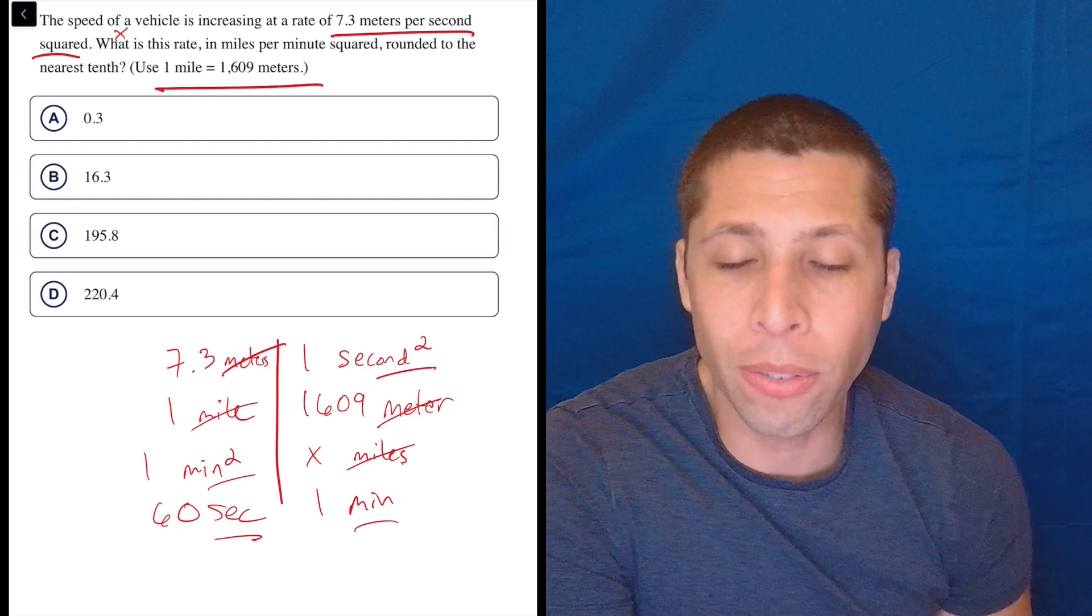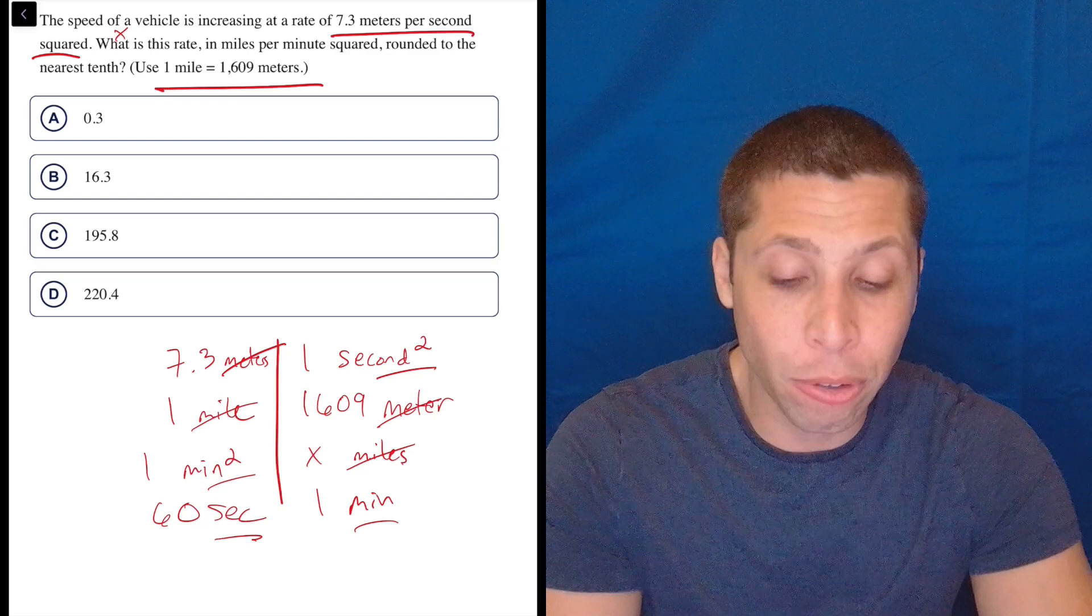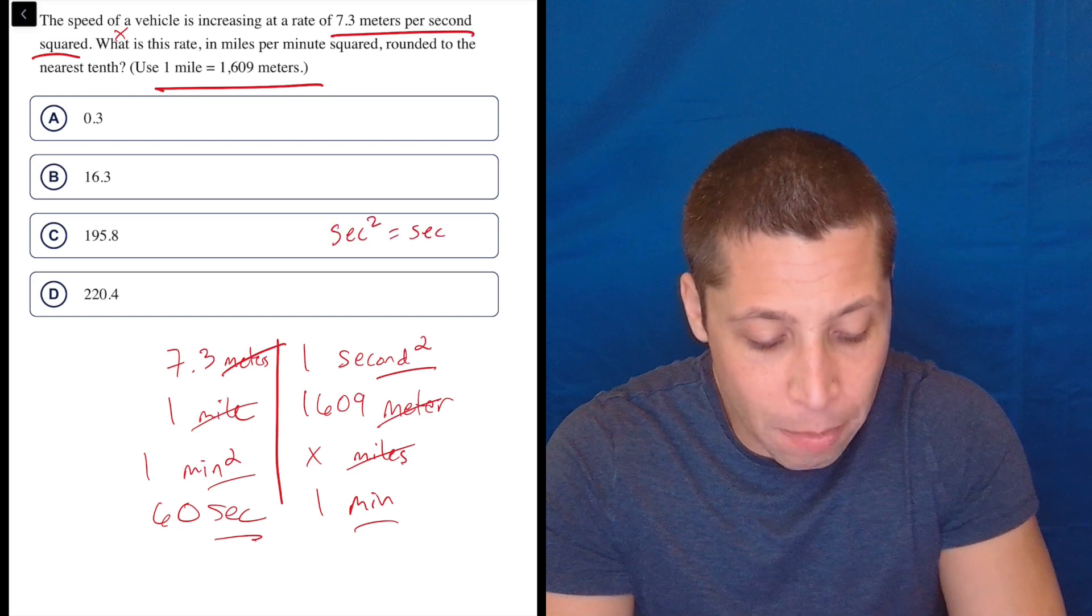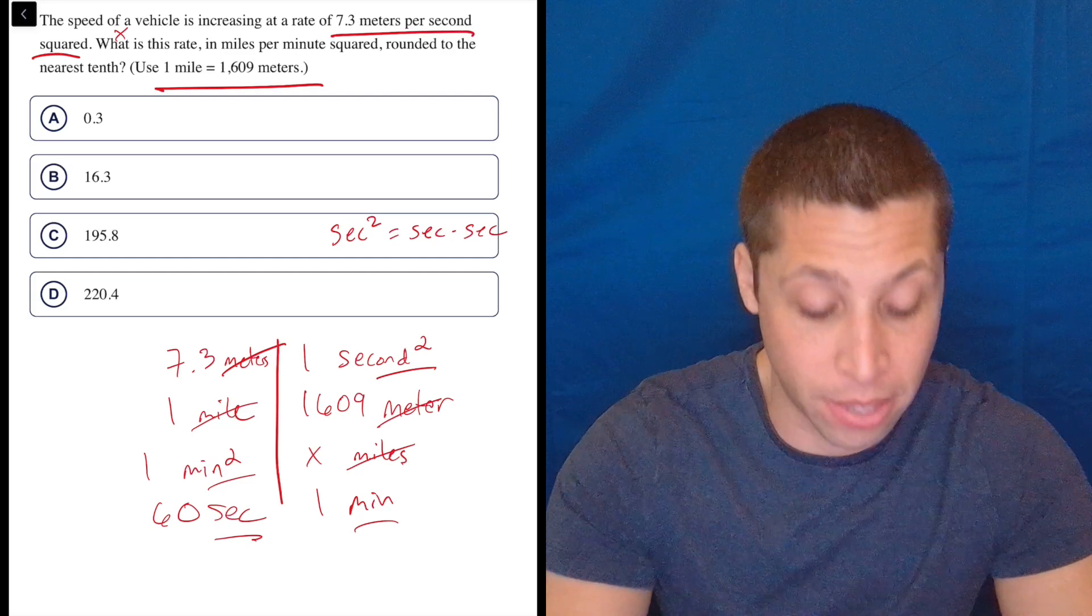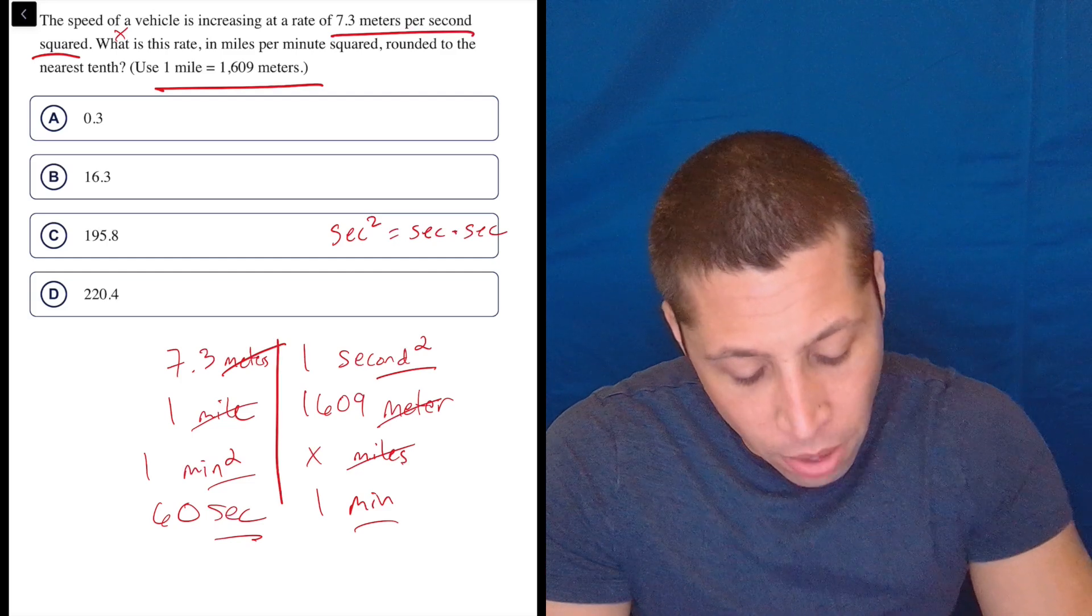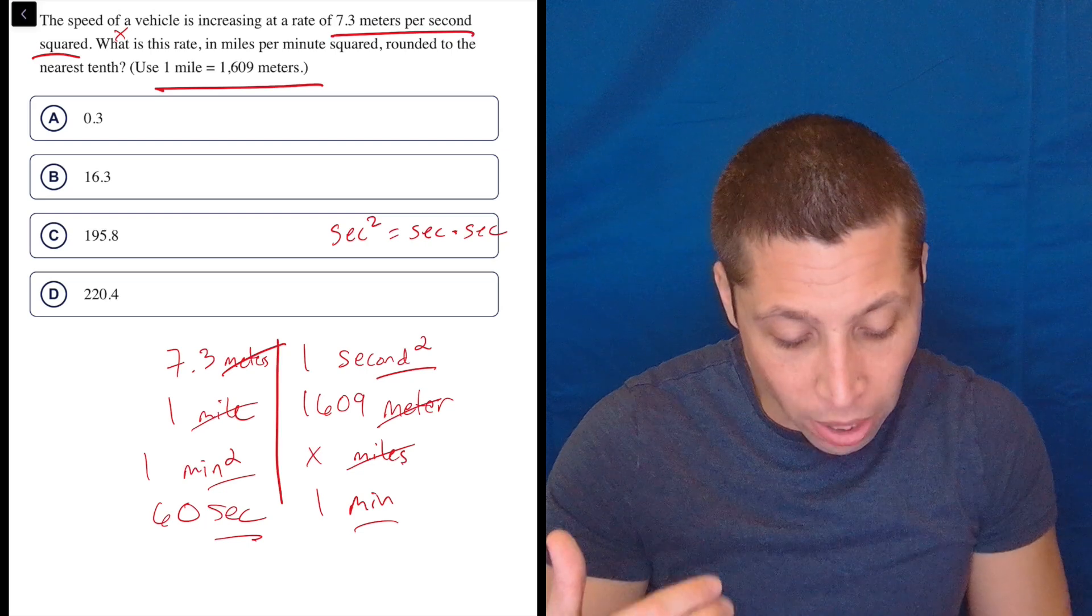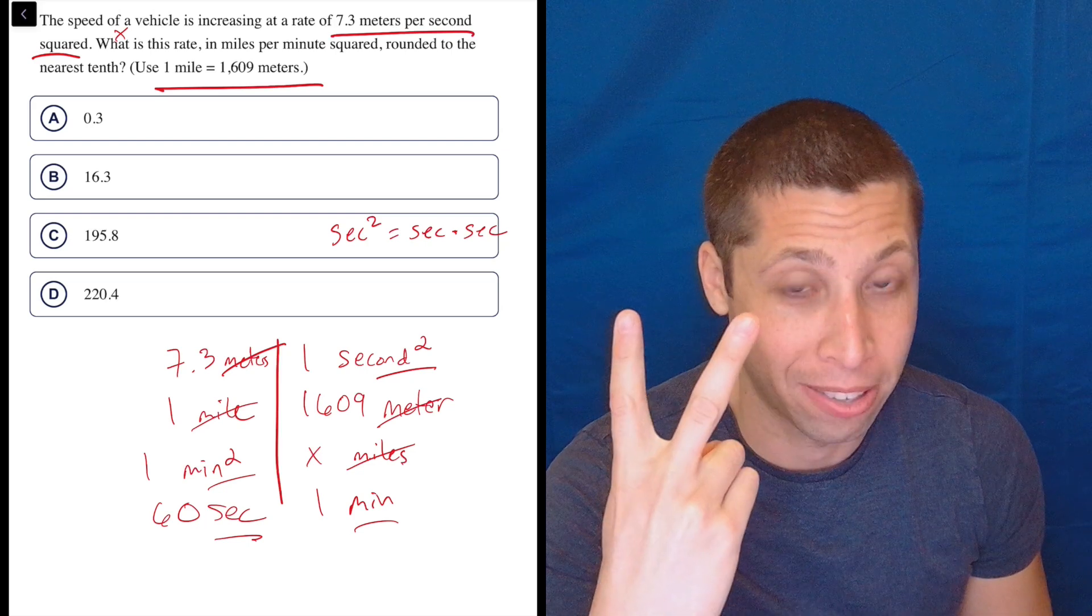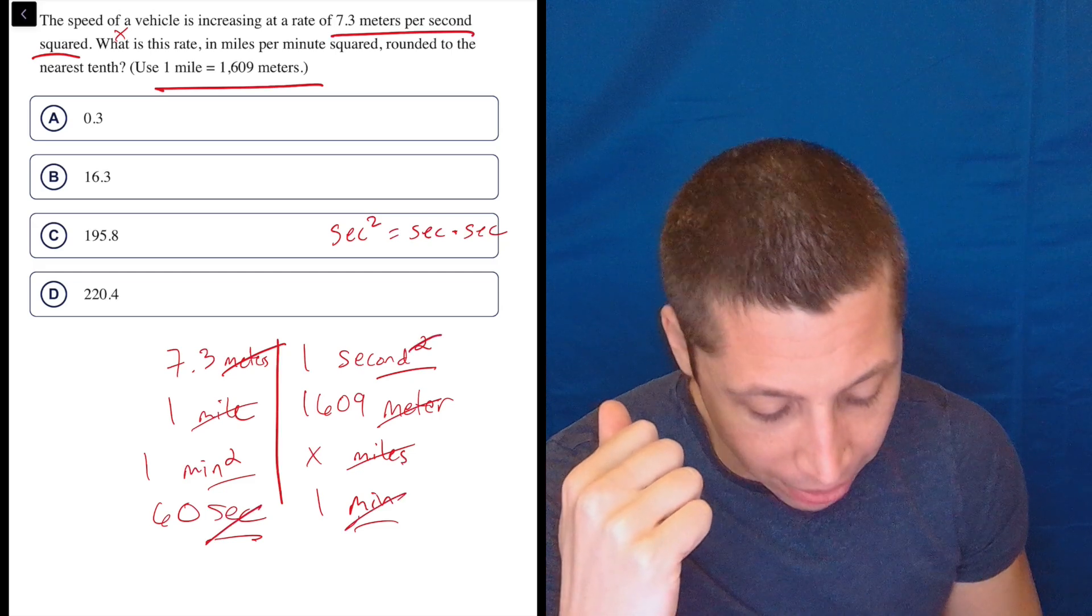And you don't have to worry about what that really means from like a physics standpoint, but you have to realize that basically seconds squared is the same as multiplying seconds by themselves twice, right? Seconds times seconds. So what I've done right now is I'm trying to have things cancel out, but what I really have with the second squared is I have two seconds that I have to cancel out. So I can cancel out one of them, but I've got another one left over. Same thing with the minutes.